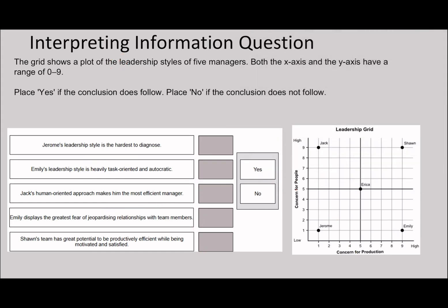Let's go to this question then. The grid shows a plot of the leadership styles of five managers. Both the x-axis and the y-axis have a range of 0 to 9. This is a different style of data. You can see here you've got the leadership grid, concern for people, concern for production, and it places things in different areas. Once again, if you'd like to take a pause, I'll go through it after you guys have had a go.